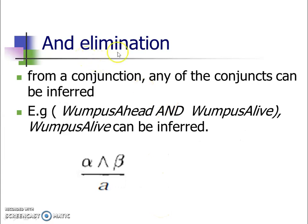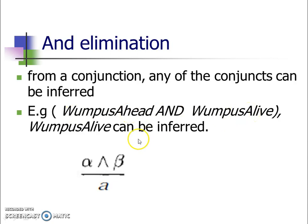Going ahead to the And-Elimination rule: from a conjunction, any of the conjuncts can be inferred. For example, from the statement 'wumpus ahead AND wumpus alive,' we can infer two statements: 'wumpus ahead' as one statement and 'wumpus alive' as another. Mathematically, whenever alpha AND beta are given, you can infer alpha; and whenever alpha AND beta are given, you can also infer beta.